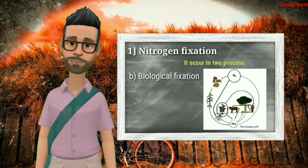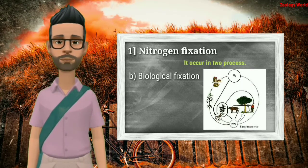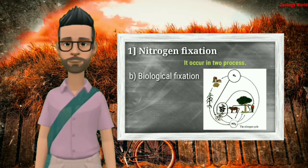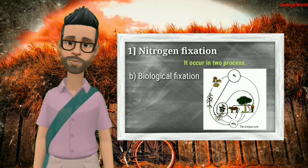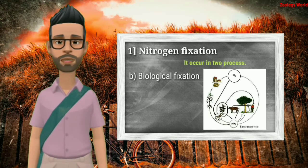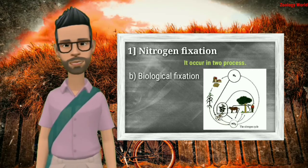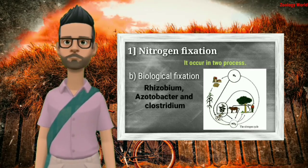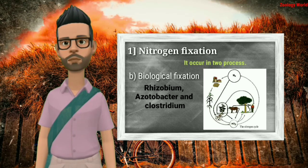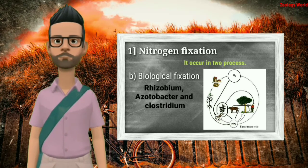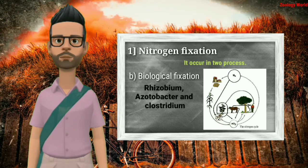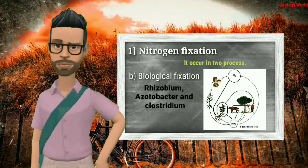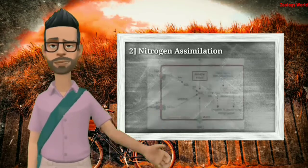Biological fixation is the other process. Biological agencies which fix free nitrogen from the atmosphere include soil and water bacteria, which may be free-living or symbiotic. Free-living nitrogen fixers include aerobic and anaerobic bacteria, blue-green algae, and some other microbes. Three genera of bacteria — Rhizobium, Azotobacter, and Clostridium — as well as Anabaena, Allosonia, and Tollipatrix are important nitrogen fixers.